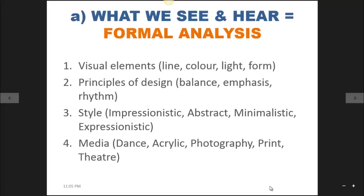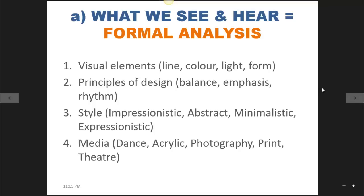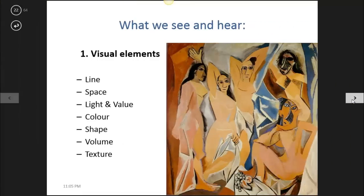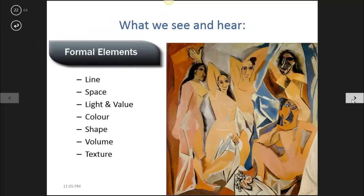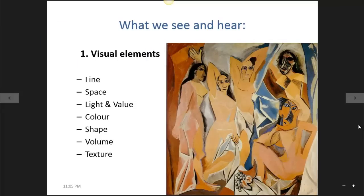In this section we are going to be looking at how to analyze a work using the elements and the principles of design. There are other ways to look at artworks such as style and media, but we will be focusing on number 1 and 2 as shown on the screen. Let's look at visual elements first. These are also called the formal elements. They include line, space, light and value, color, shape, volume and texture.